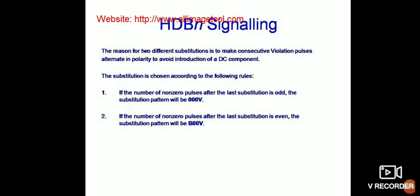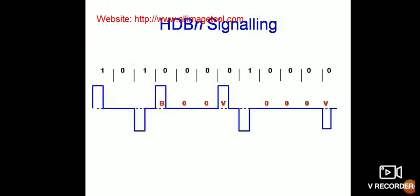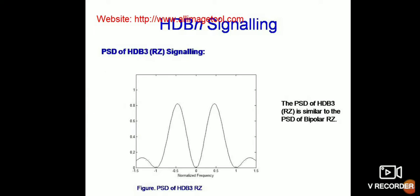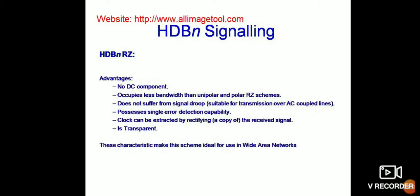If the number of non-zero pulses after the last substitution is odd, the substitution will be 000V. If the number of non-zero pulses after the last substitution is even, the substitution pattern will be B00V. This diagram shows the HDB3 signaling with continuous pulses in either one or zero format.